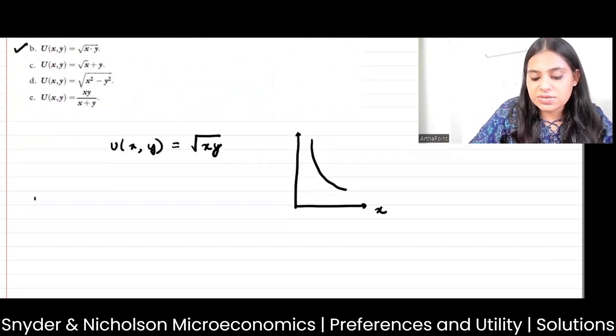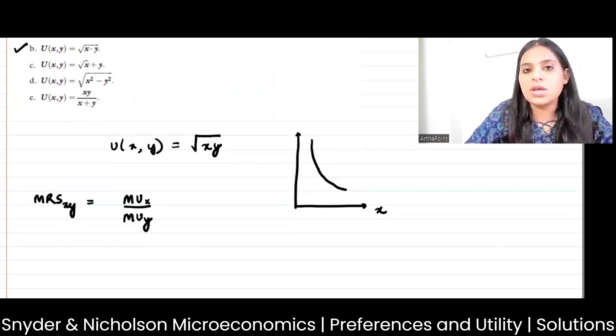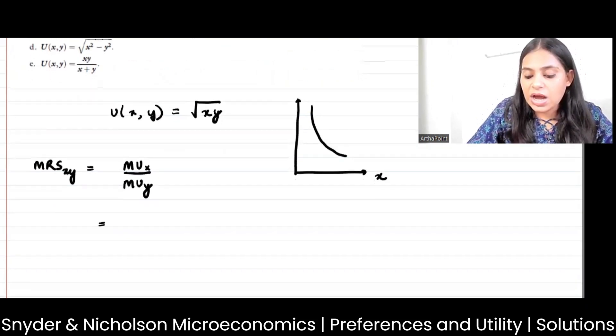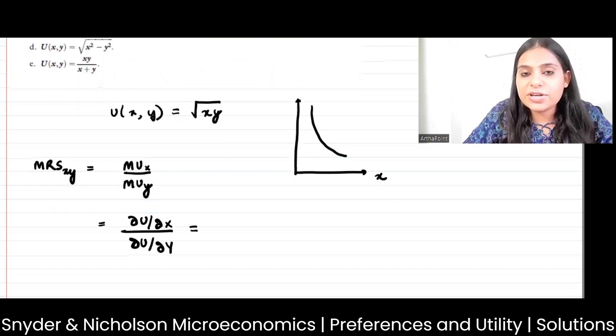Let us find MRS. This will be MU x divided by MU y. This is how utility changes as x changes over how utility changes as y changes.